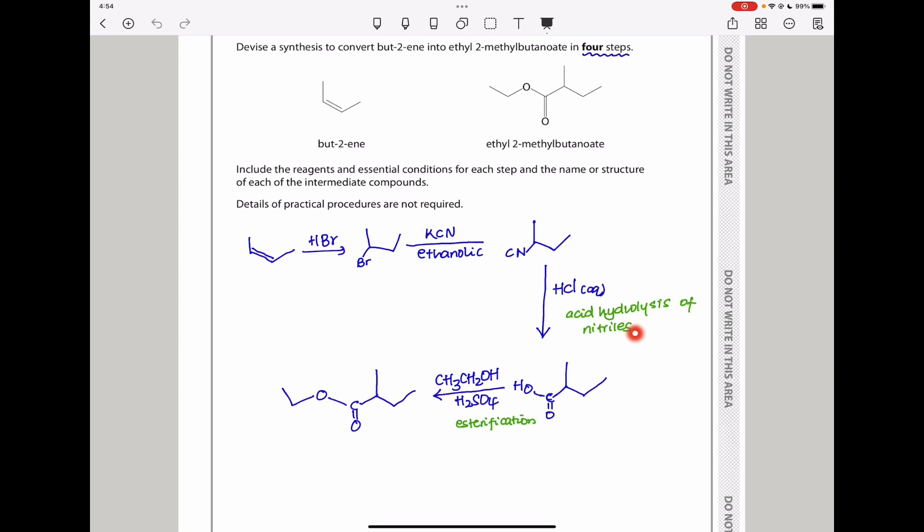After having a nitrile, I carried out acid hydrolysis because when nitriles are hydrolyzed in the presence of an acid, you will produce a carboxylic acid. Later on, I carried out esterification. Carboxylic acid plus an alcohol gave me an ester, which is my final product here. But this occurs in the presence of sulfuric acid.